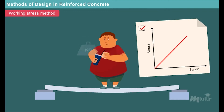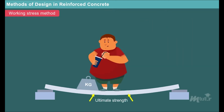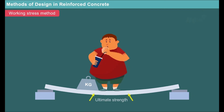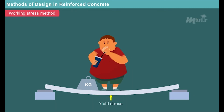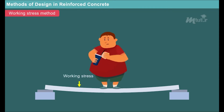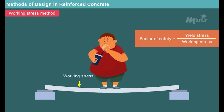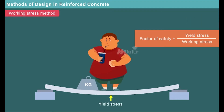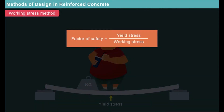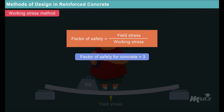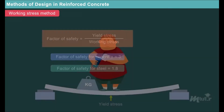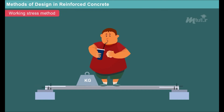Working stress method ensures safety by restricting the stresses in materials which may be induced by the expected working loads on the structure. The assumption of linear elastic behavior is justifiable since the permissible stresses are kept below the ultimate strength of the material. The ratio of yield stress of the material to the corresponding working stress is termed as the factor of safety, where yield stress is the stress level at which the reinforced concrete ceases to behave elastically. In this method, a factor of safety of 3 is used for concrete and 1.8 is used for steel.